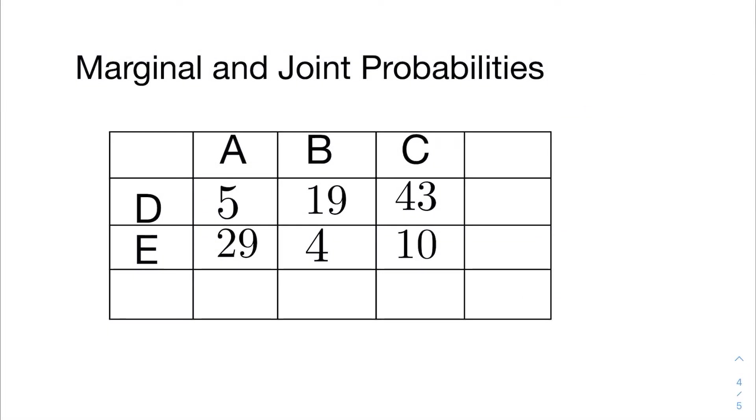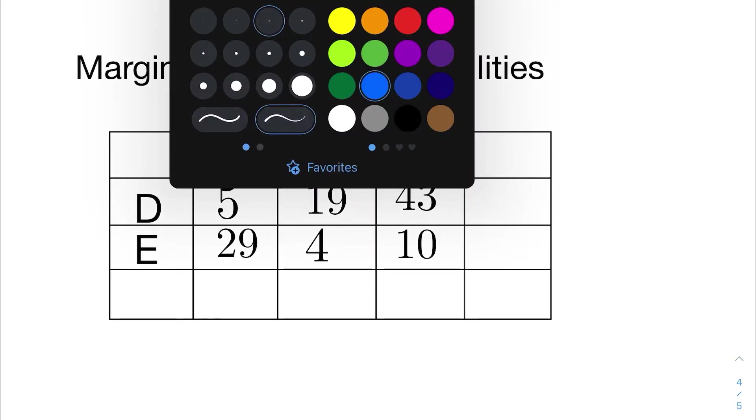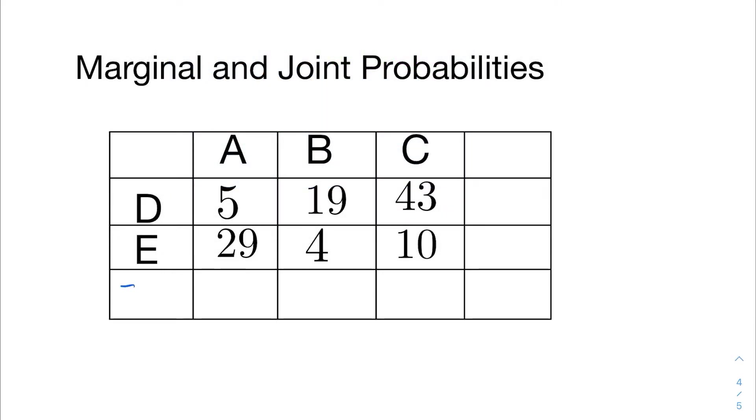Okay, so now we'll take a look at marginal and joint probabilities. So we have these generic events in a crosstab or a contingency table. And in order to start calculating probabilities, we're going to need to know the totals. So I'm going to go ahead and I'm going to find the totals for the rows and the columns.